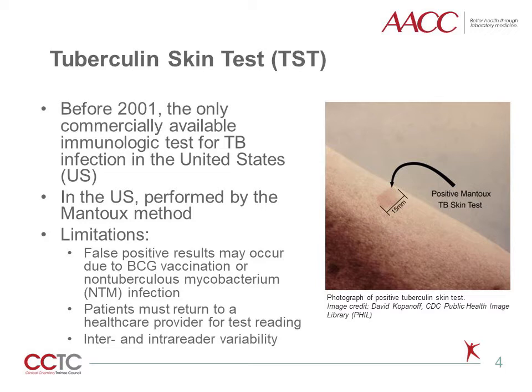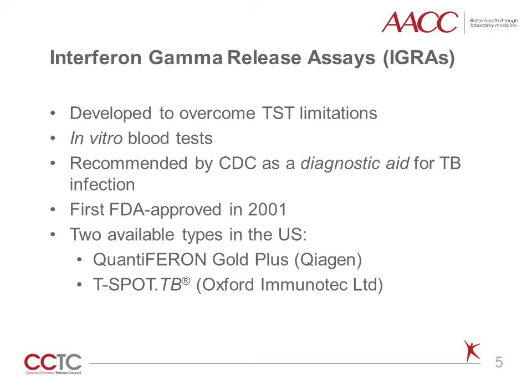Third, it has been shown that variability exists in test readers' measurement of induration. Interferon gamma release assays, the second category of screening tests for TB infection, were designed at least in part to address these limitations of TST. They are in vitro blood tests that are now recommended by the Centers for Disease Control and Prevention as an aid in diagnosing infection with M. tuberculosis.